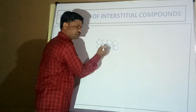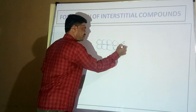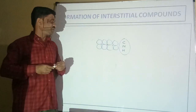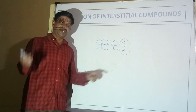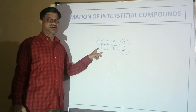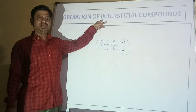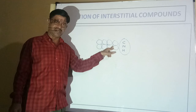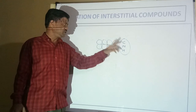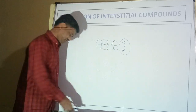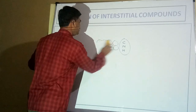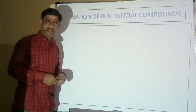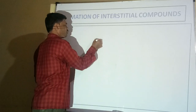Remember, the interstitial particle may be from carbon, nitrogen, or hydrogen. For first level MCQ, remember that these elements get entrapped in case of D block elements forming interstitial compounds. In addition to this, remember an important feature: these are non-stoichiometric compounds.